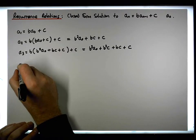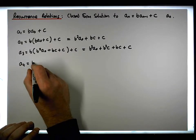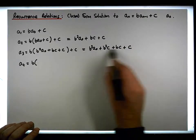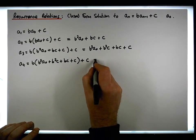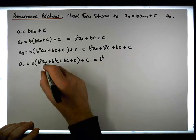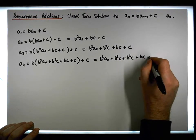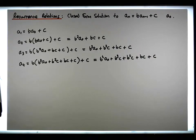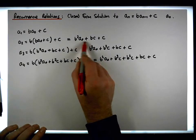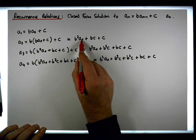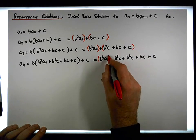Let's do one more — a₄. It's b times a₃, and a₃ was b³·a₀ plus b²c plus bc plus c, plus the dangling c. Multiplying out gives b⁴·a₀ plus b³c plus b²c plus bc plus c. This expression can be broken up into two parts: the term dependent on the base case a₀, and everything else.